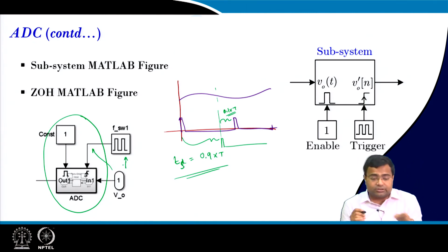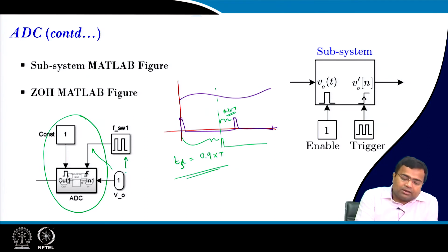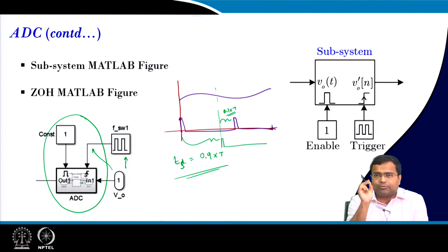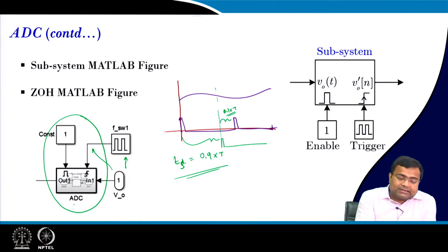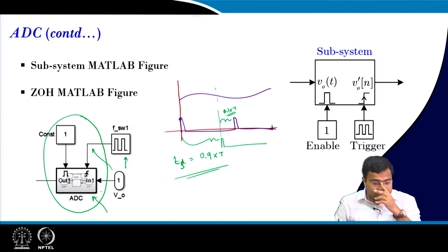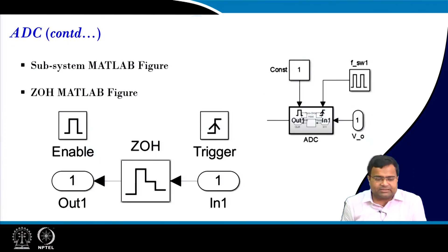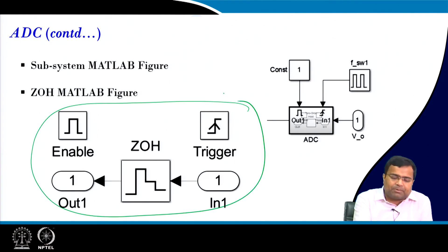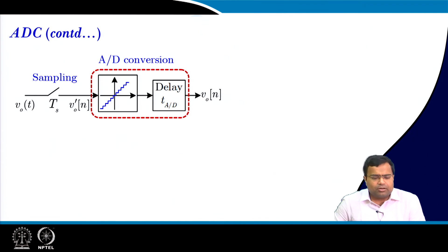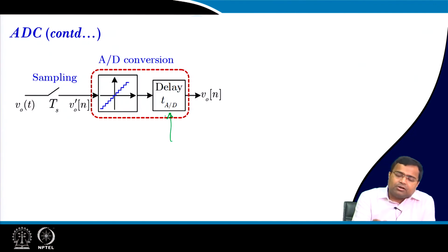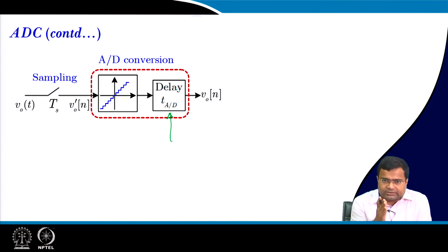Similarly, for event-based sampling — as discussed in week 2 for constant on-time and off-time control — we cannot simply use a zero order hold because it requires a fixed sampling time for uniform sampling. This triggered block can be used for event-based sampling: the trigger clock drives the sampling based on events such as switching edges. Inside the block, the enable is permanently set to 1, and the trigger clock controls when sampling occurs.